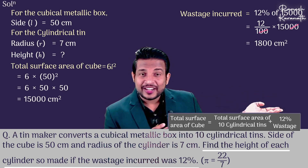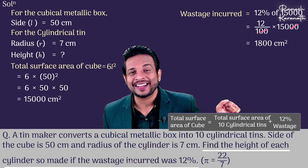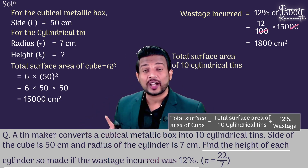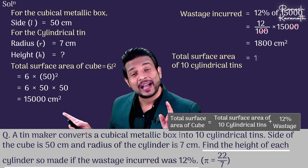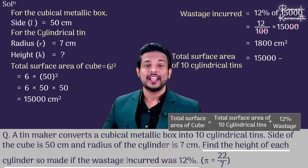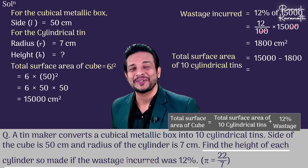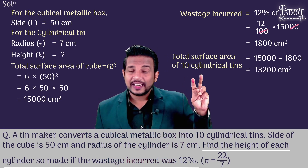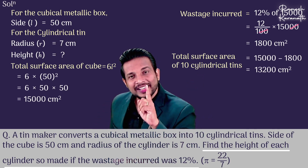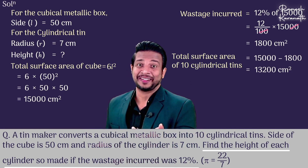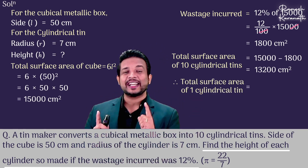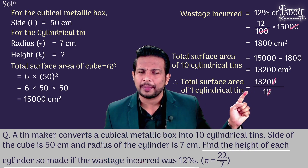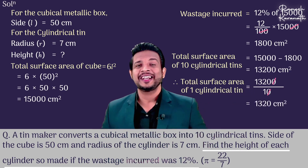Now, total surface area of 10 cylindrical tins = total surface area of cube minus wastage = 15,000 − 1,800 = 13,200 cm². Therefore, the total surface area of 1 cylindrical tin = 13,200 ÷ 10 = 1,320 cm².